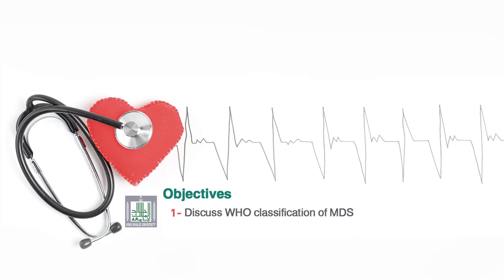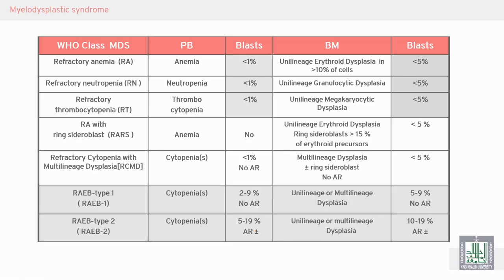We will continue hematological malignancy for medical students. When WHO classified MDS, changes have occurred. They classify refractory anemia where blasts are less than 1% in the peripheral blood and less than 5% in the bone marrow. This is called anemia with unilineage erythroid dysplasia — the abnormality is in the erythroid only, with dysplasia in more than 10% of the erythroid series in the bone marrow.